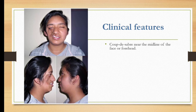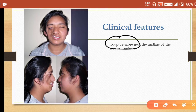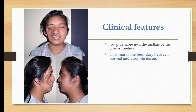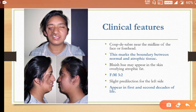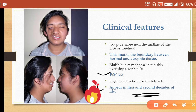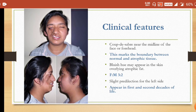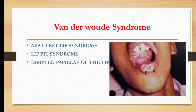The clinical features include coup de sabre near the midline of the face or forehead. Coup de sabre is also seen while studying scleroderma — it is a localized form or a deep lining or furrow on the face that distinguishes the normal from the abnormal side. A bluish hue may appear in the skin overlying the atrophic fat. Female to male ratio is 3:1, with slight predilection for the left side. It appears in the first and second decades of life. Coup de sabre is the peculiar feature of Parry-Romberg syndrome.